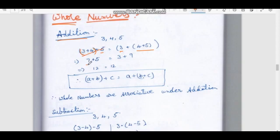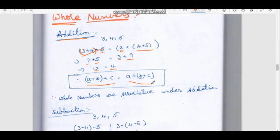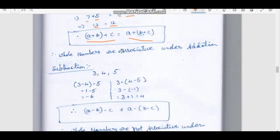3 plus 4 is equal to 7, so 7 plus 5 is 12. Now the other way: 4 plus 5 is 9, and 3 plus 9 is 12. Both sides are equal. Therefore, (A + B) + C = A + (B + C). This is the associative rule — whole numbers are associative under addition.